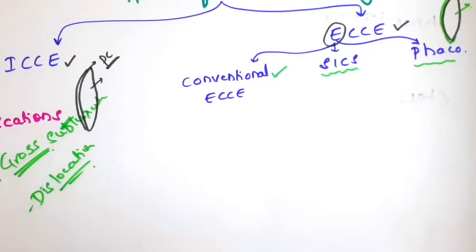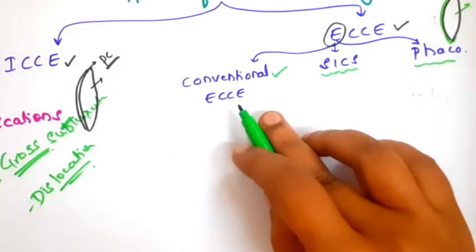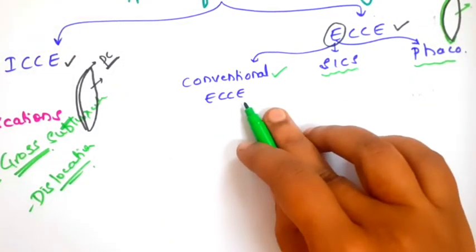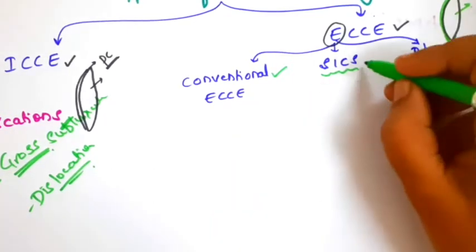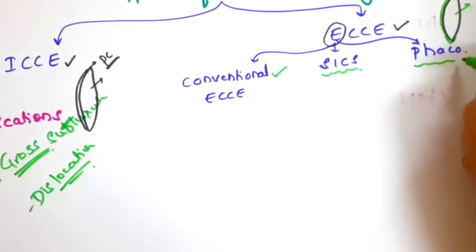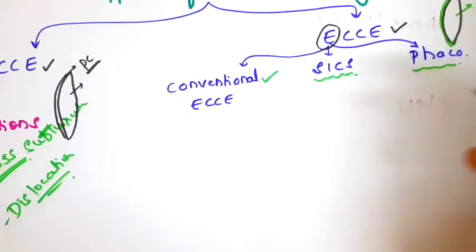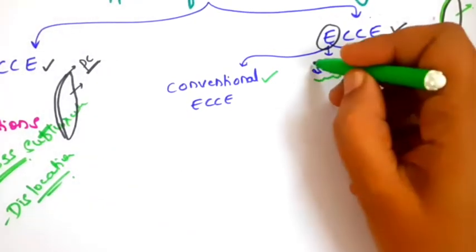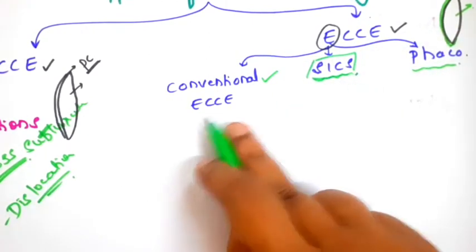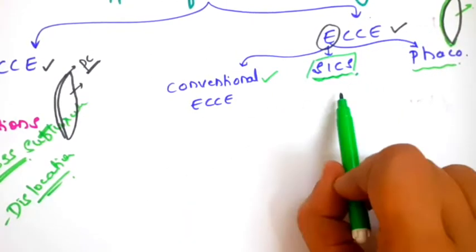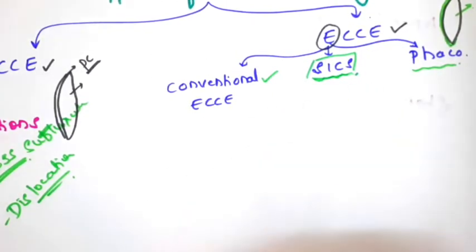Coming to extracapsular cataract surgery, we have conventional ECCE, small incision cataract surgery (SICS), and phacoemulsification. Nowadays the conventional ECCE is also not commonly done. The surgeries done nowadays are either small incision cataract surgery or phacoemulsification. I will explain the steps of small incision cataract surgery and in between tell the difference between conventional ECCE and SICS.